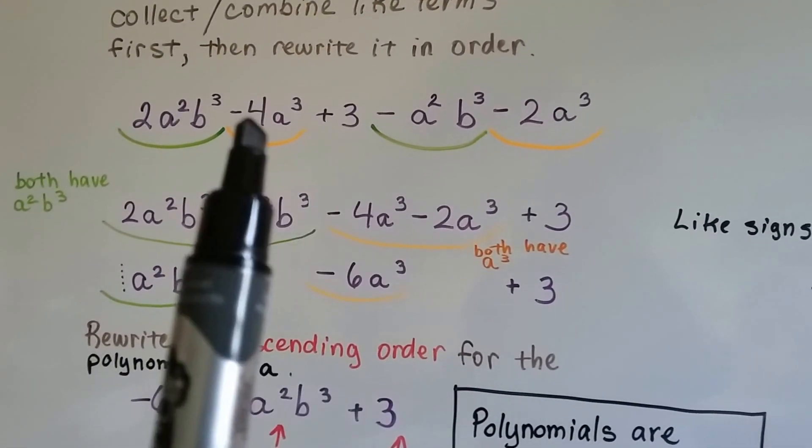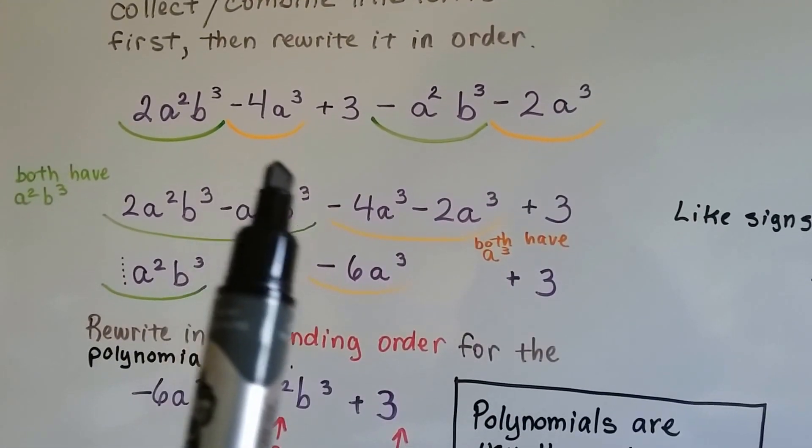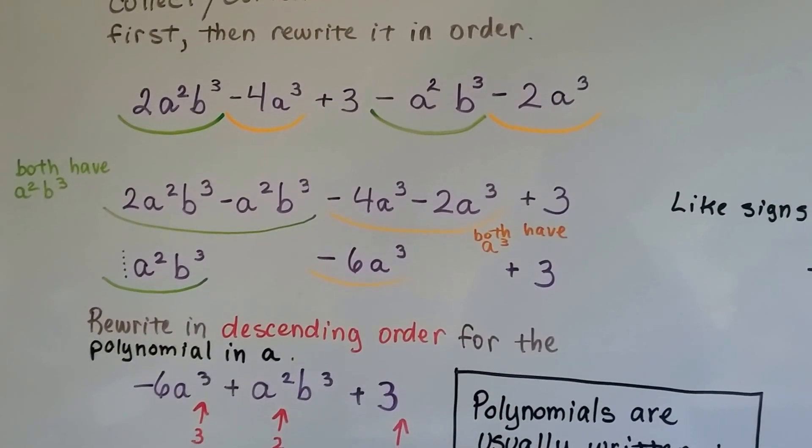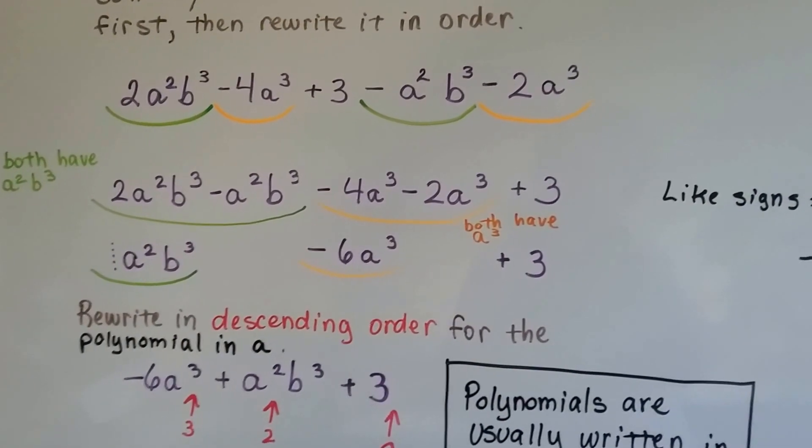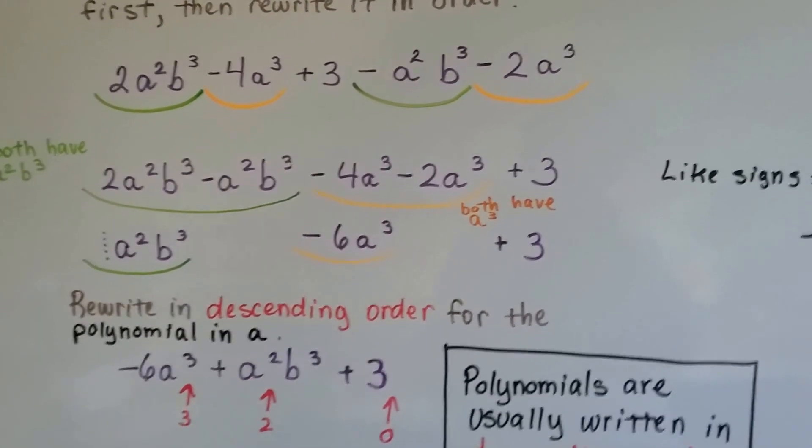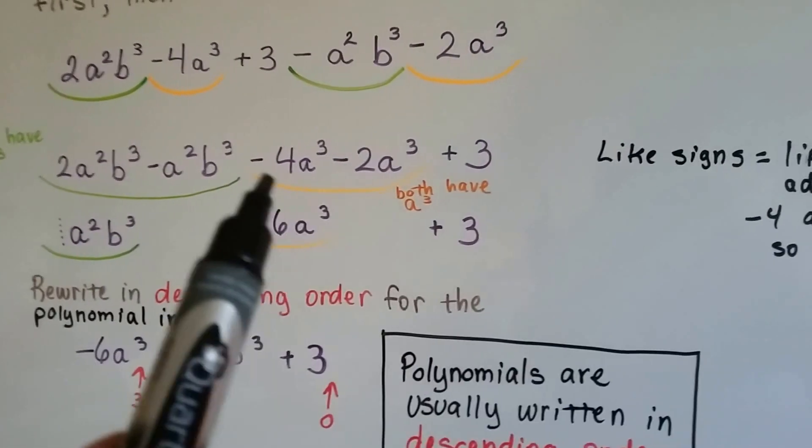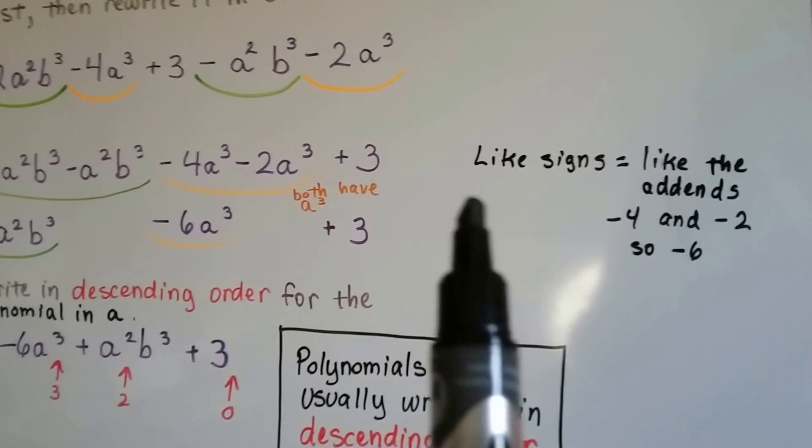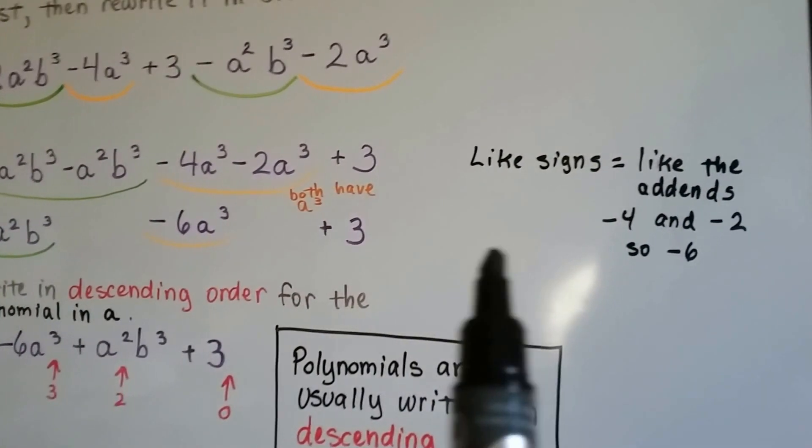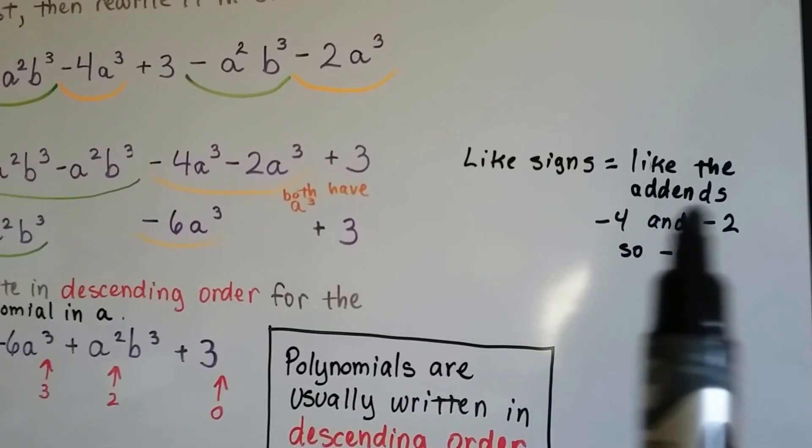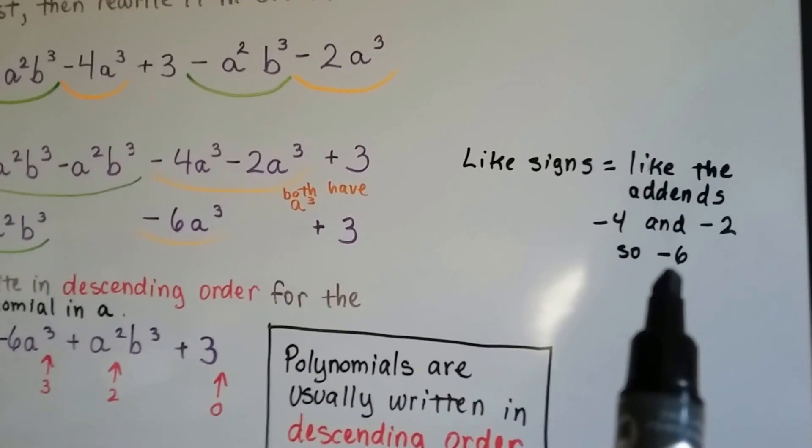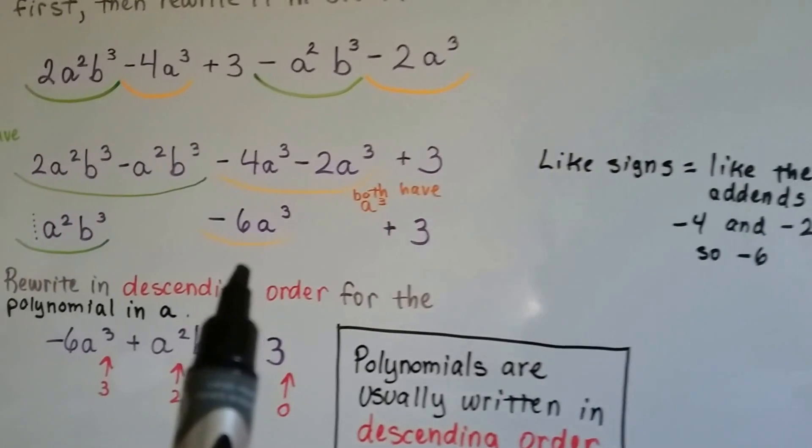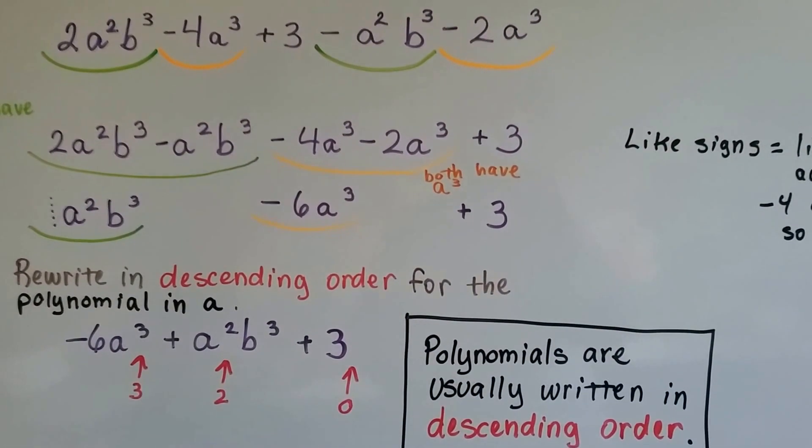And when we combine the two orange ones together, the negative 4a to the 3rd power and the negative 2a to the 3rd power, they both have a to the 3rd power, so they're like terms, and they both have a negative sign. And remember what we say? Like signs means the sign is going to be like the addends. So we've got a negative and a negative, so the answer is going to be a negative. So we've got a negative 6a to the 3rd power.